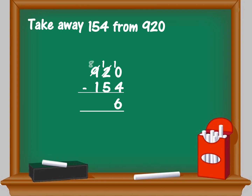Cut 9 and write 8, and borrow 1 to the tens place. Now you have 11 minus 5 which is 6, and in the hundreds place you have 8 minus 1 which is 7. The answer, or the difference, is 766.